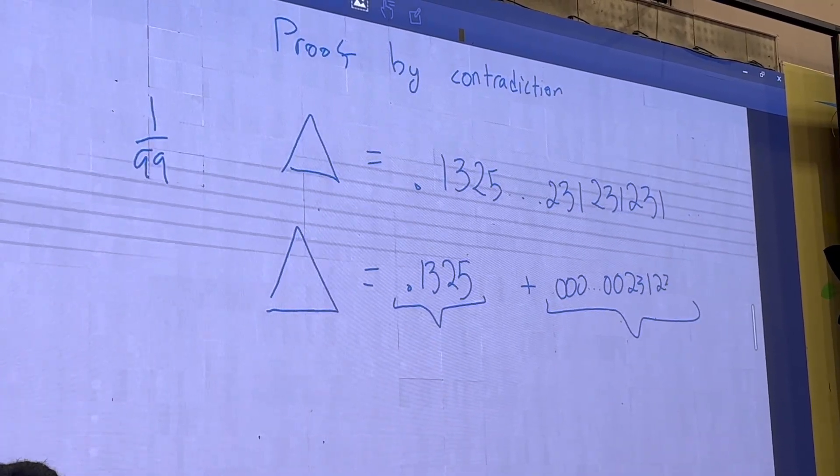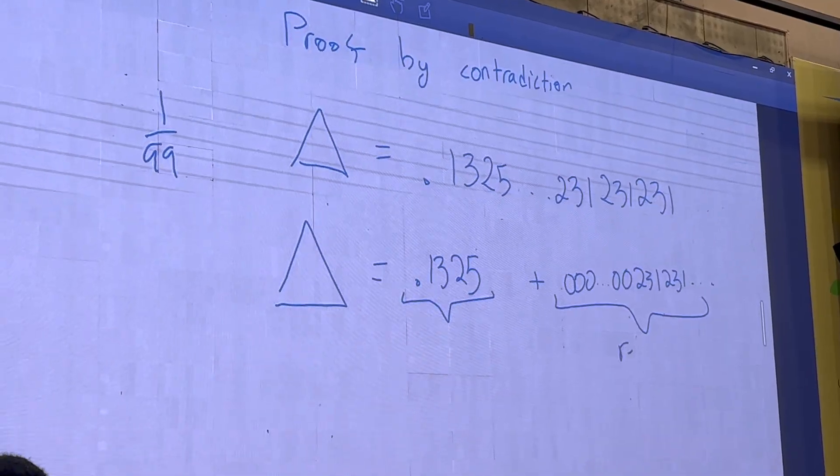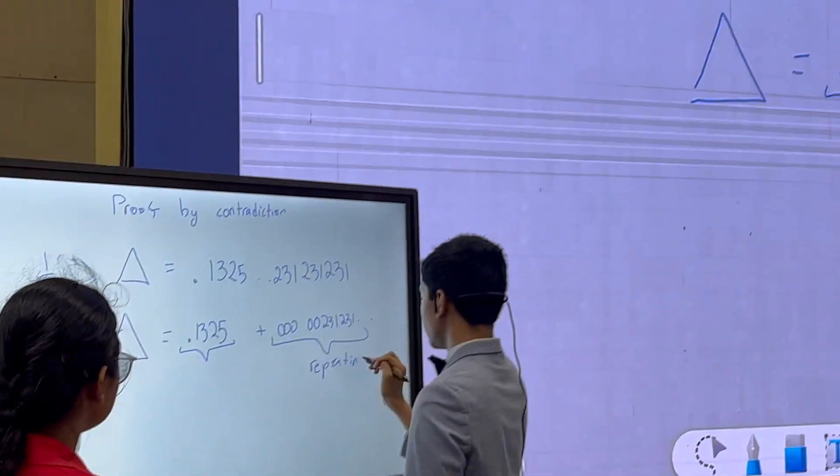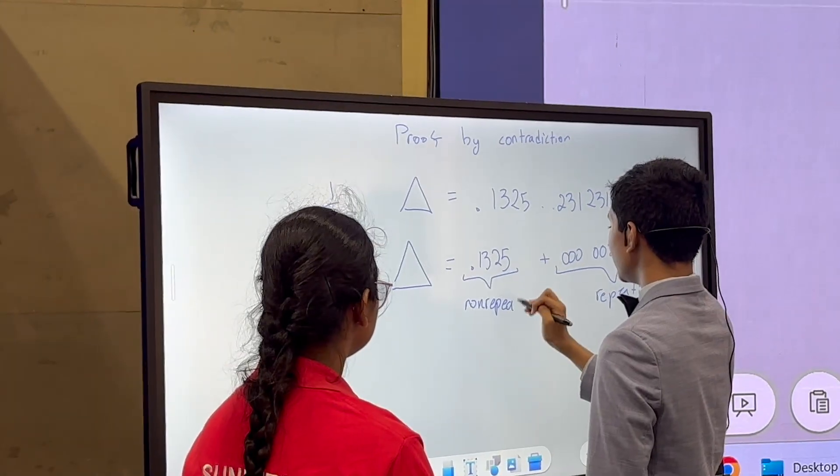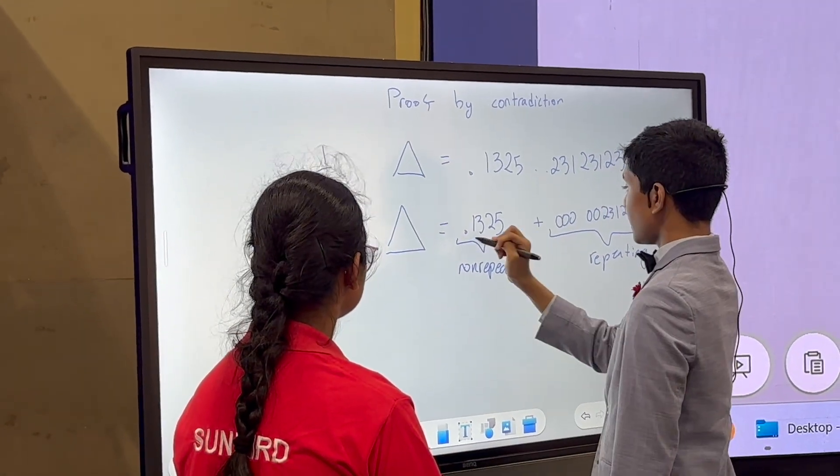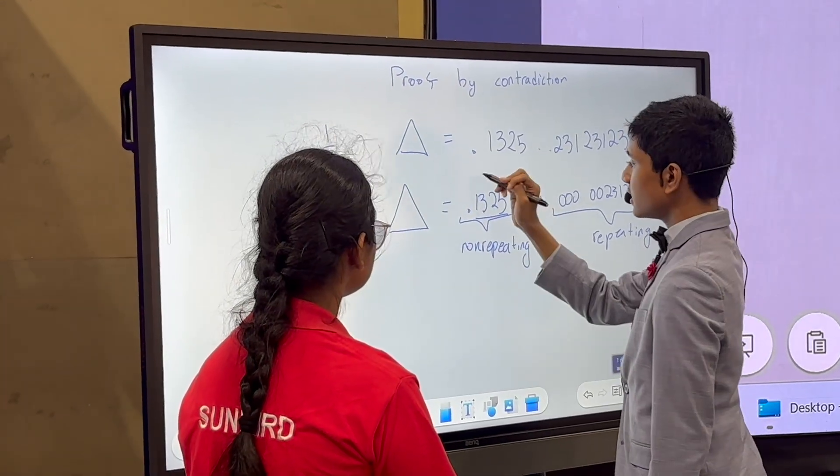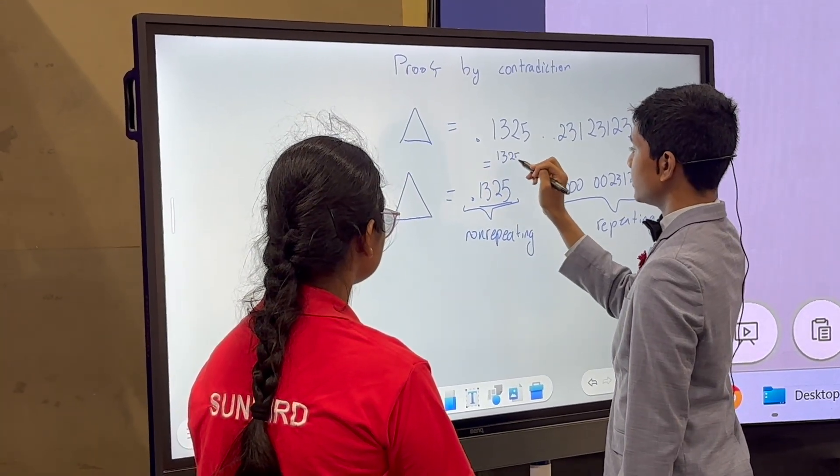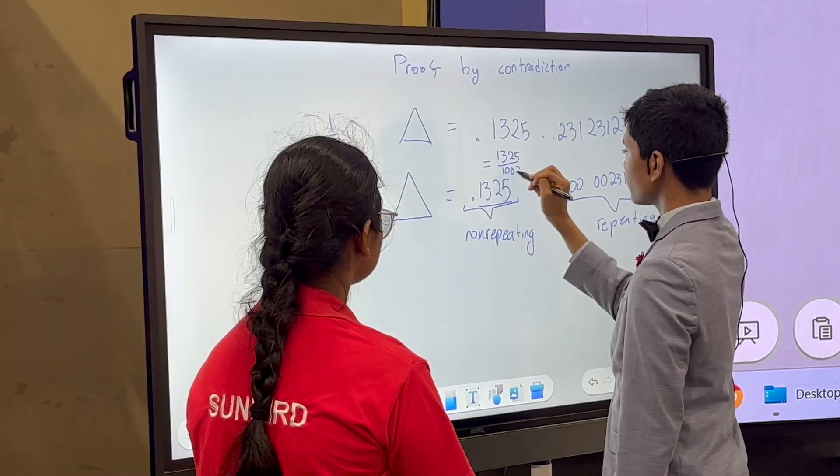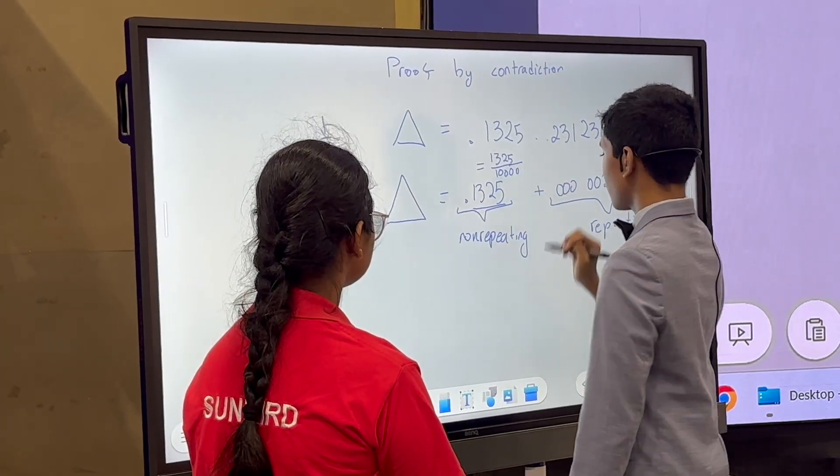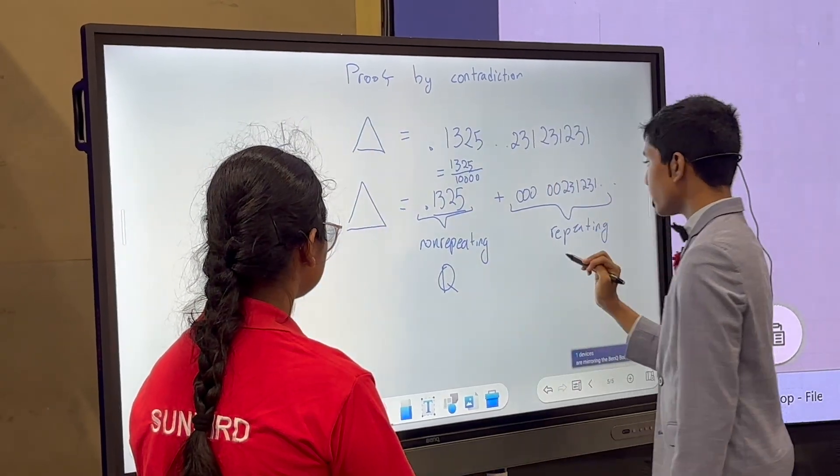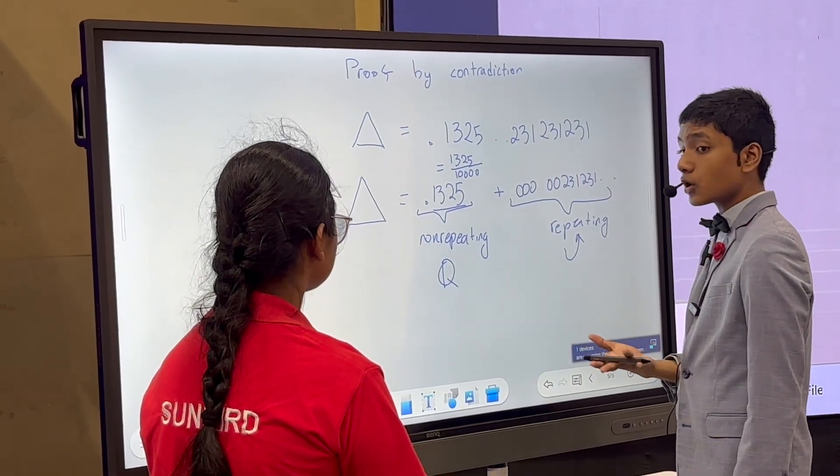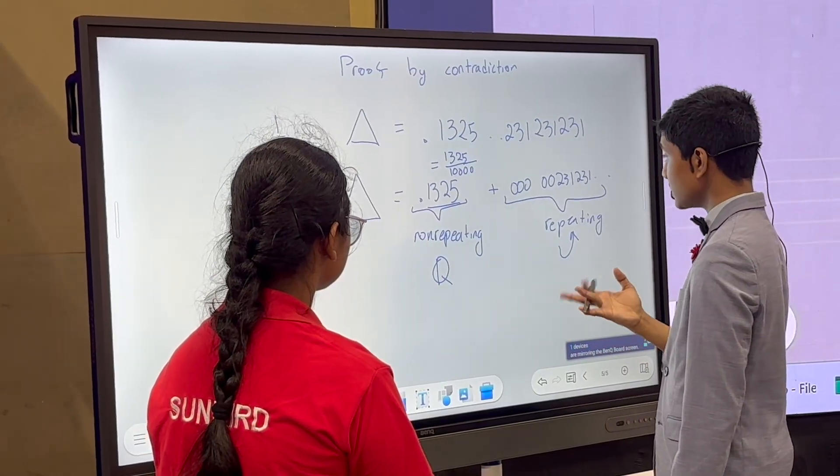231, 231, and so on and so forth. Repeating and non-repeating, because any terminating decimal expansion has to be rational by definition. You can always just write it as the digits divided by some power of 10. This non-repeating part is rational. So what about the repeating part? Well, the repeating part can be written as a geometric series.